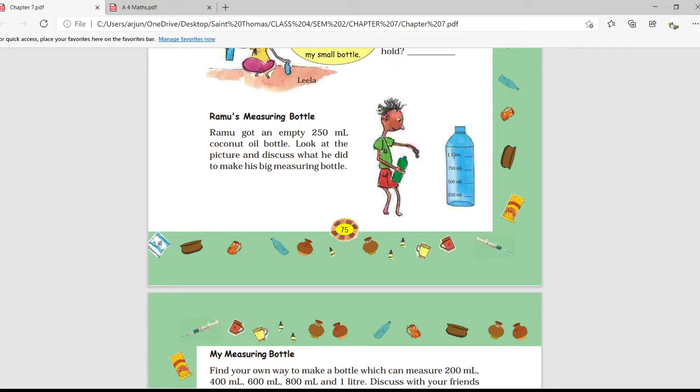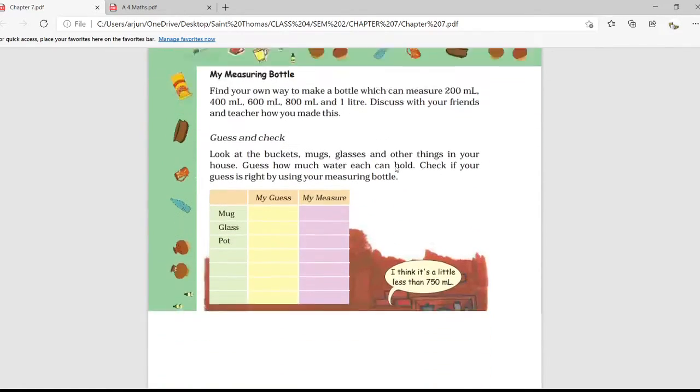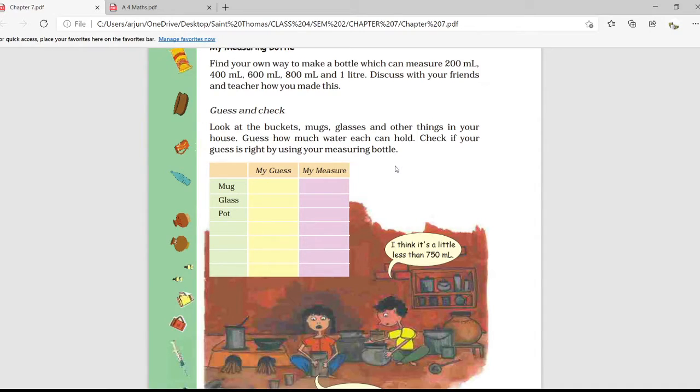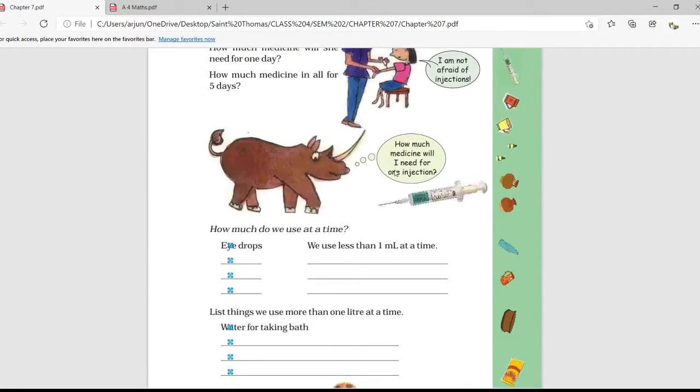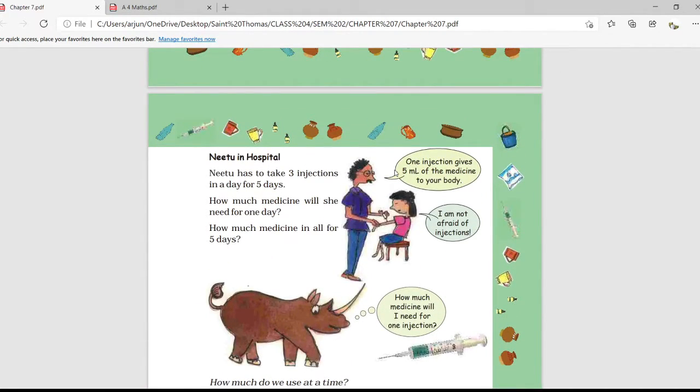Then we have seen Ramu's measuring bottle, how he has made this measuring bottle with the help of a bottle which was of the quantity 250 ml only. Then we have seen the story of my measuring bottle. So these were some of three topics we have covered in chapter number seven. Then we have seen 'Need to in Hospital.'